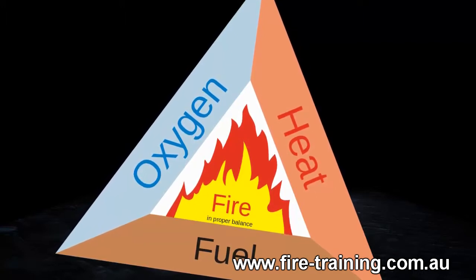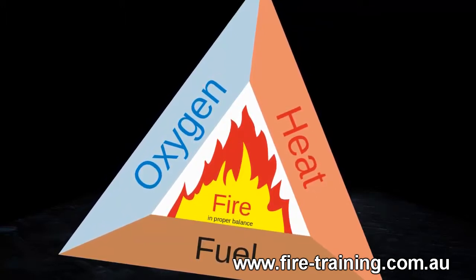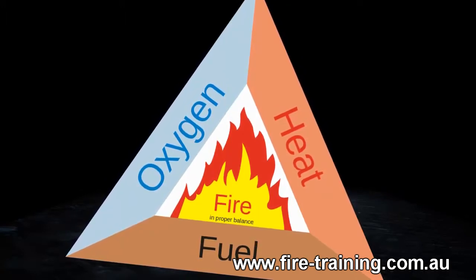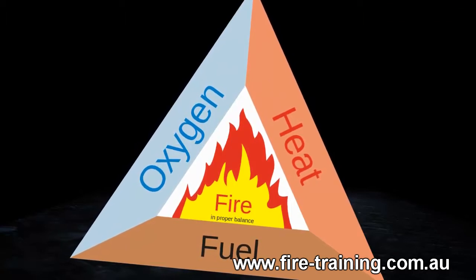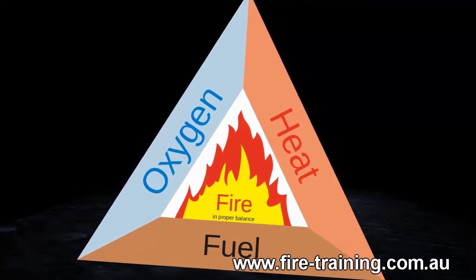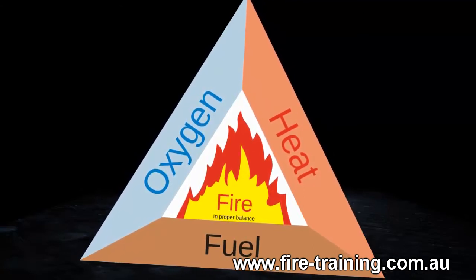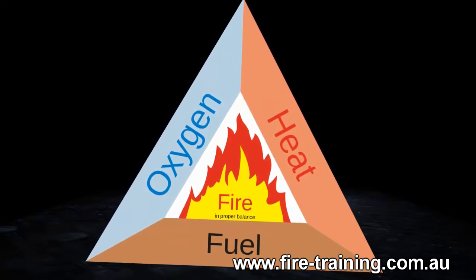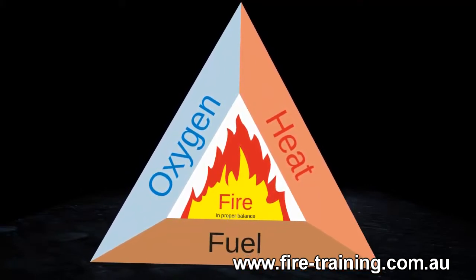Putting out a fire is about deciding which of the three components on the fire triangle can most easily be removed from the fire situation. Water is the first choice for many classes of fires because it takes away the heat and can also suffocate the fire by reducing the amount of available oxygen.